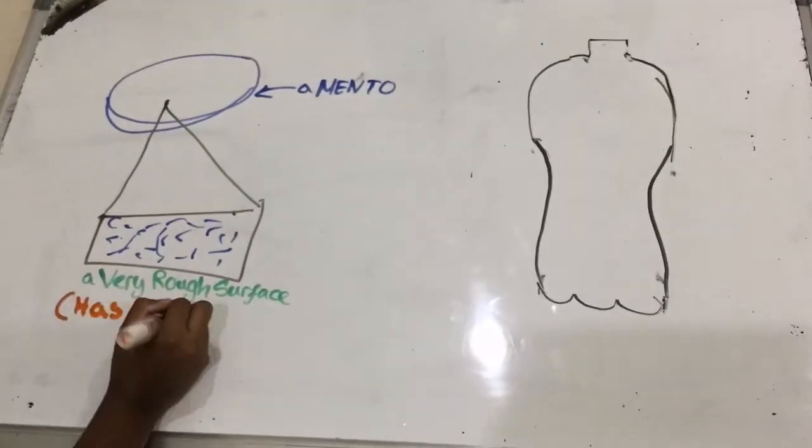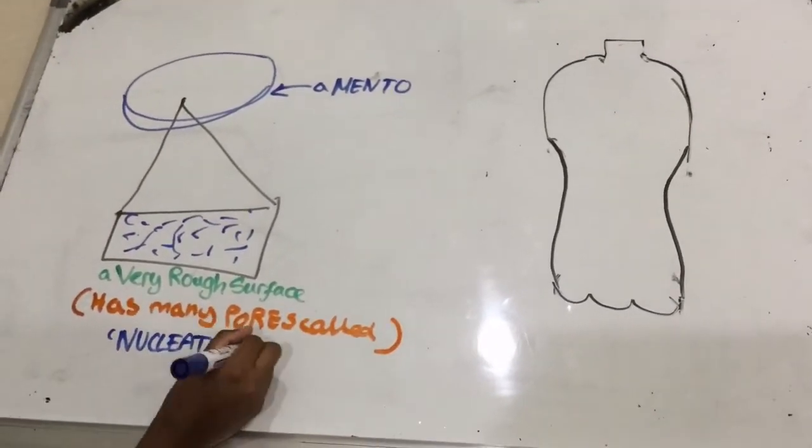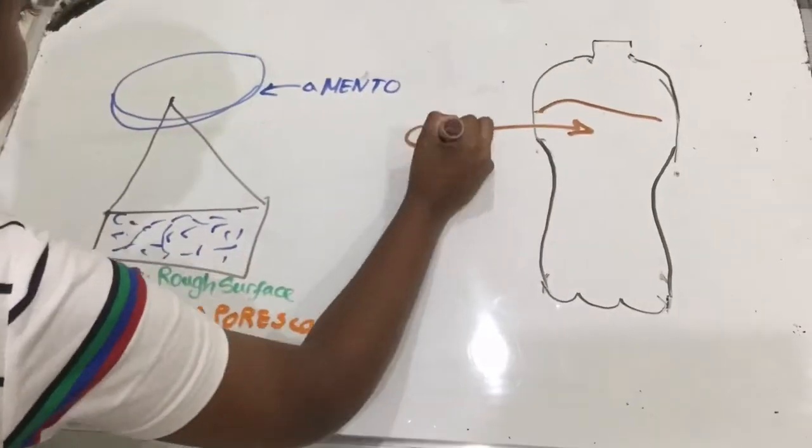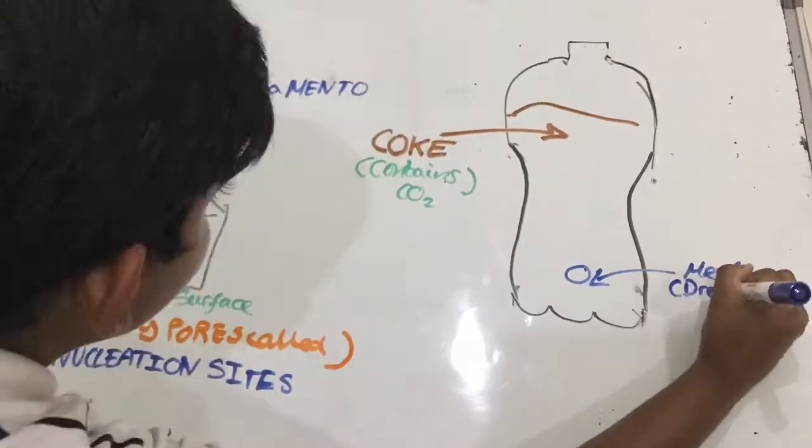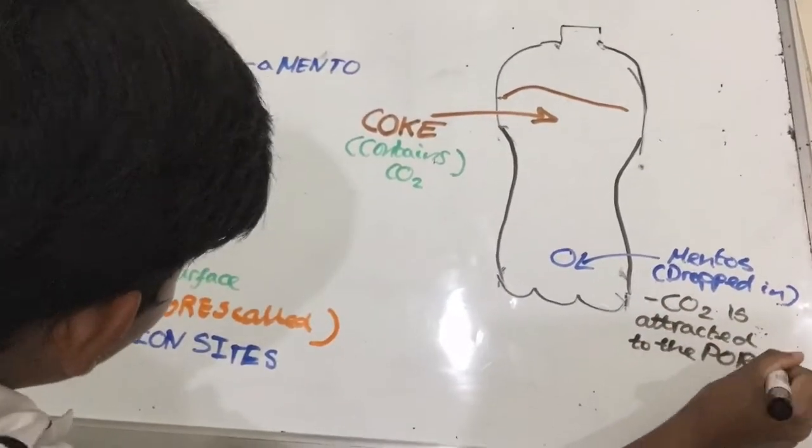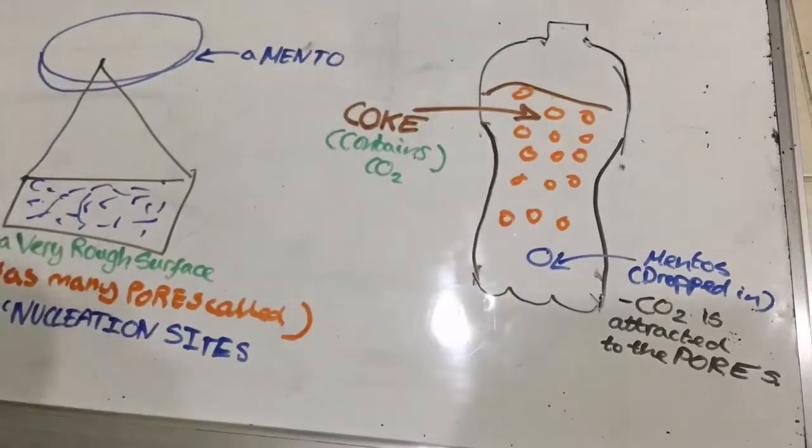The coke contains carbon dioxide. The carbon dioxide is attracted to the pores on the mentos and when they join they release carbon dioxide bubbles. This creates high pressure on the coke and when it is released it creates a coke geyser.